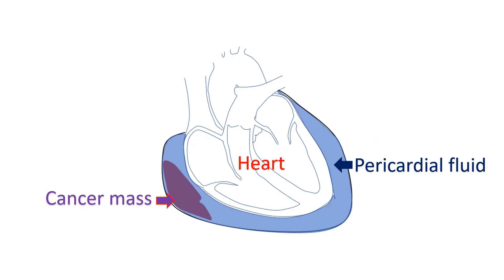If the cause is a cancer, in addition to draining the pericardial fluid and relieving the compression on the heart, treatment for cancer will have to be given. This may include medications, radiation, and surgery depending on the type of cancer. Cancer could be in nearby organs like the lung or breast, or from distant organs. Analysis of the aspirated fluid may give information on the type of cancer, and investigations such as a positron emission tomography may be considered to search for the location and spread.